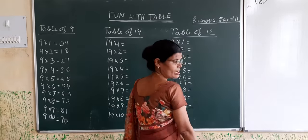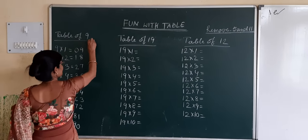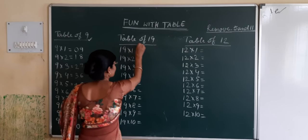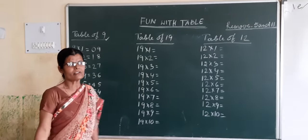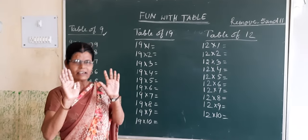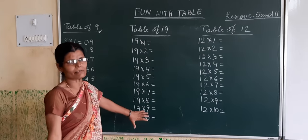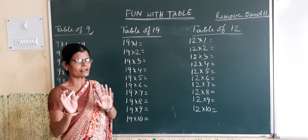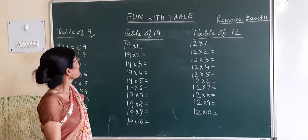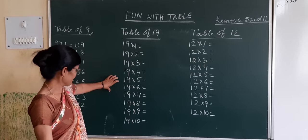This is the table of 9. Now see, table of 9. Therefore, we have only 10 fingers in our hands. That's why we cannot show the 19 table in our fingers. But what can we do to memorize the table of 19?